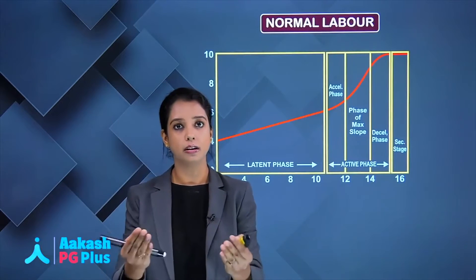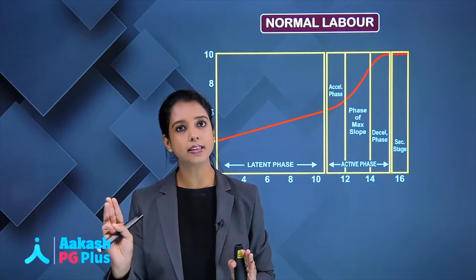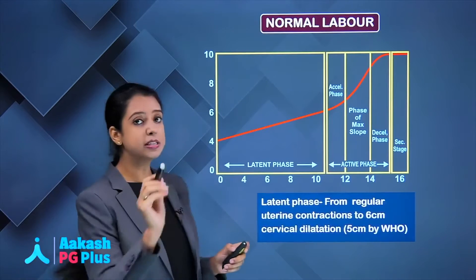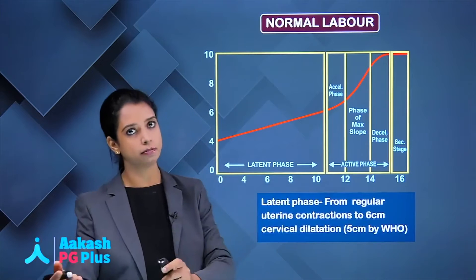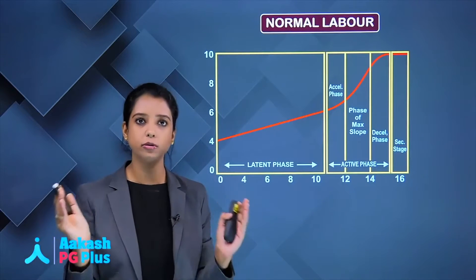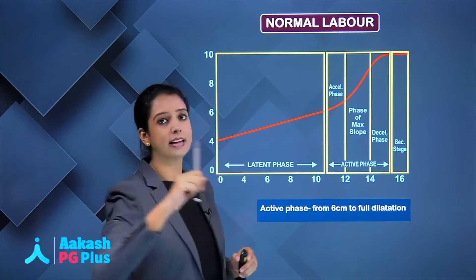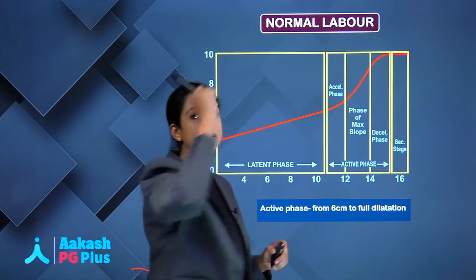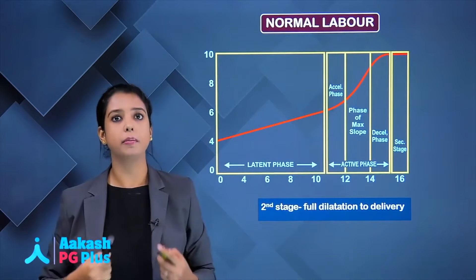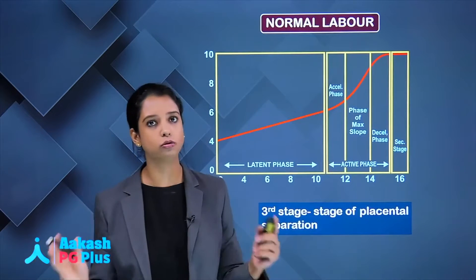We will deal with prolonged labour phase by phase. Normal labour has 3 stages. The first stage is divided into latent and active phase. Latent phase is from onset of regular uterine contractions up to 6 centimetres — WHO says 5 cm but prefer 6 cm in answers. Active phase is from 6 cm to full dilatation. Second stage is from full dilatation to delivery of the baby. Third stage is the stage of placental separation.